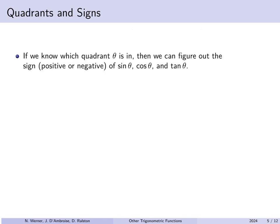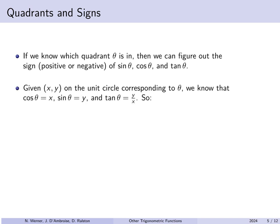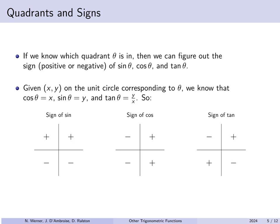Now if we know what quadrant theta is in, we can figure out whether the sine, cosine, and tangent are positive or negative. Given a point xy on the unit circle corresponding to some angle theta, cosine of theta is the x-coordinate, sine of theta is the y-coordinate, and tan of theta is the ratio of the two. The sine function, which is the y-coordinate, must be positive in quadrants 1 and 2 but negative in quadrants 3 and 4. The cosine, which is the x-coordinate, is positive in quadrants 4 and 1 but negative in quadrants 2 and 3. For the tangent: quadrant 1 gives positive over positive (positive), quadrant 2 gives positive over negative (negative), quadrant 3 gives negative over negative (positive), and quadrant 4 gives negative over positive (negative).